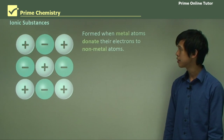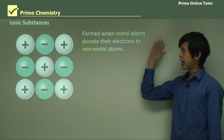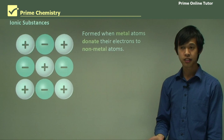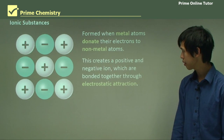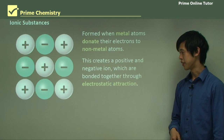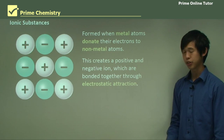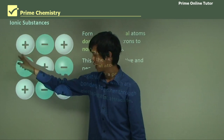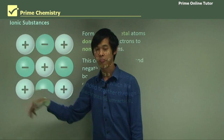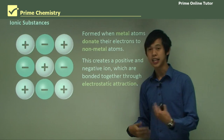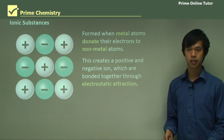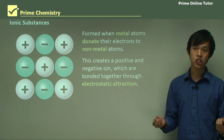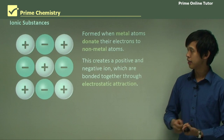Now, ionic substances. They're formed when metal atoms donate their electrons to nonmetal atoms — one forms a positive ion and the other forms a negative ion. Positive and negative ions are bonded together through electrostatic attraction — this one is attracted to that one — analogous to the way north and south poles of a magnet are attracted to one another. Oppositely charged things attract one another, and that's what's happening here.